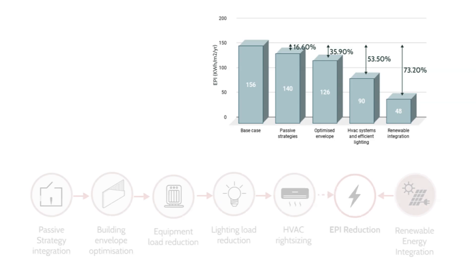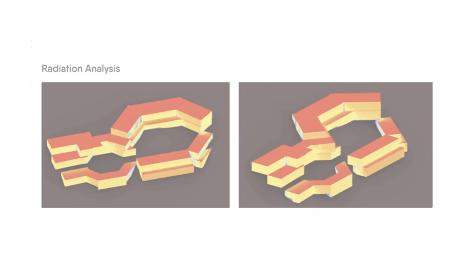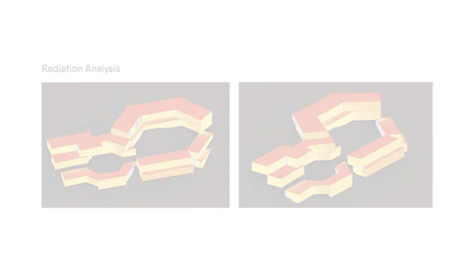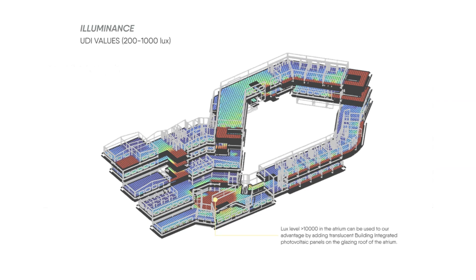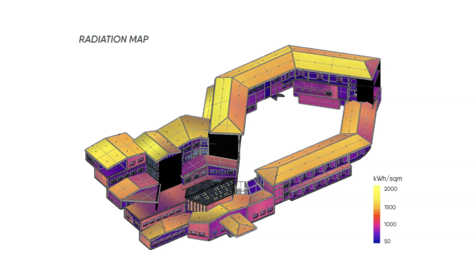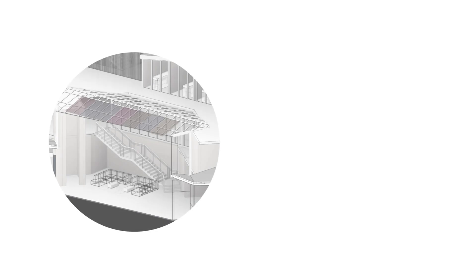Envelope optimization was done by optimizing the glazing, wall, and roof envelopes. Multiple envelopes were simulated using Design Builder, and envelopes having suitable U-values as per Super ECBC standards as well as locally available materials were chosen to reduce heat loss by up to 73.2%. We have thus achieved an EPI value of 48 kWh per square meter, which is close to our targeted EPI value of 44 kWh per square meter.